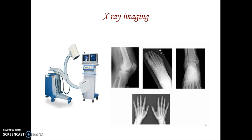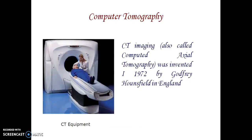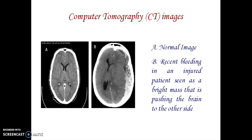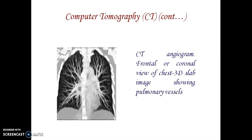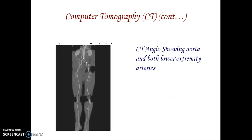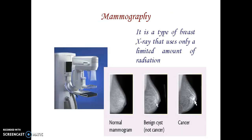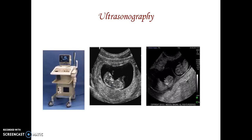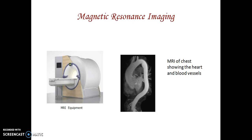X-ray imaging and CT images: CT was invented by Godfrey Hounsfield in England. A CT image can show bleeding in a patient due to injury. CT images can also be taken of the chest and lower extremity arteries and aortas. Mammographic images show normal mammogram, cystic mammogram (not cancer), and images with cancer cells. Ultrasound images can show a single baby or twin babies. MRI images show the chest, heart, and blood vessels.